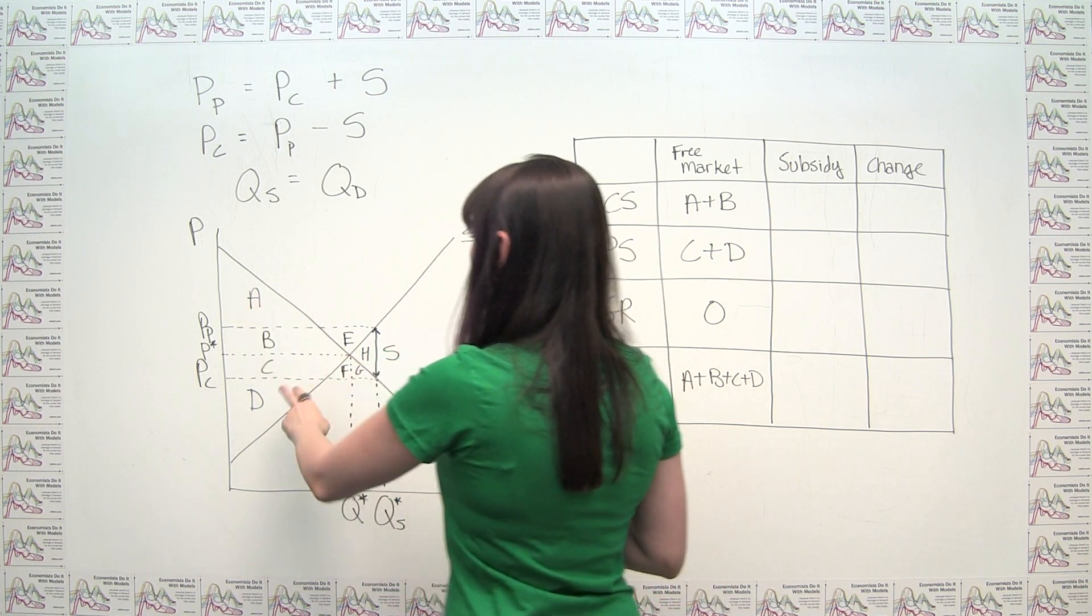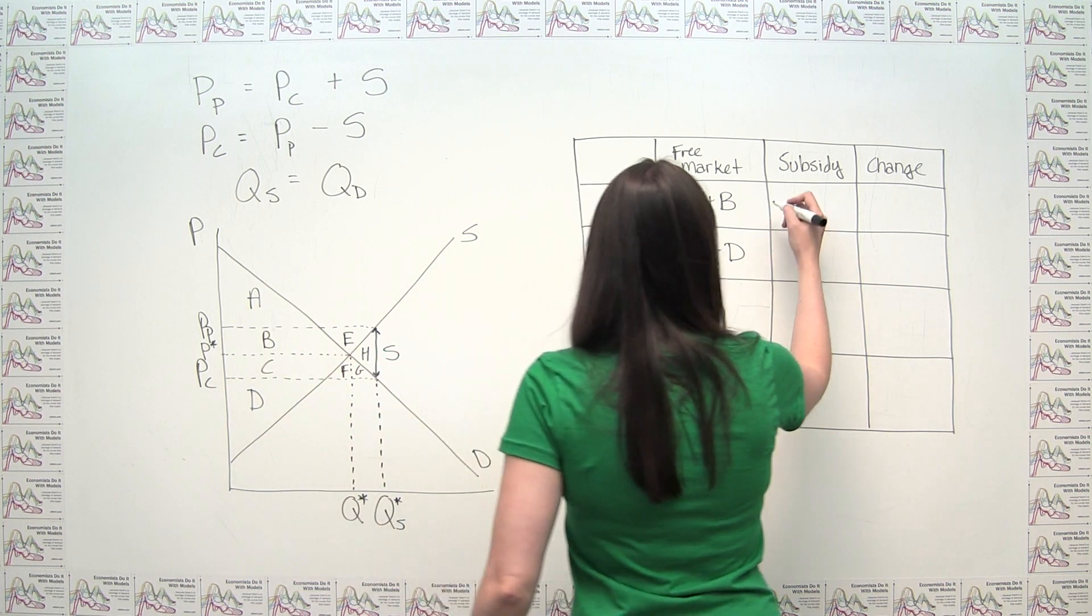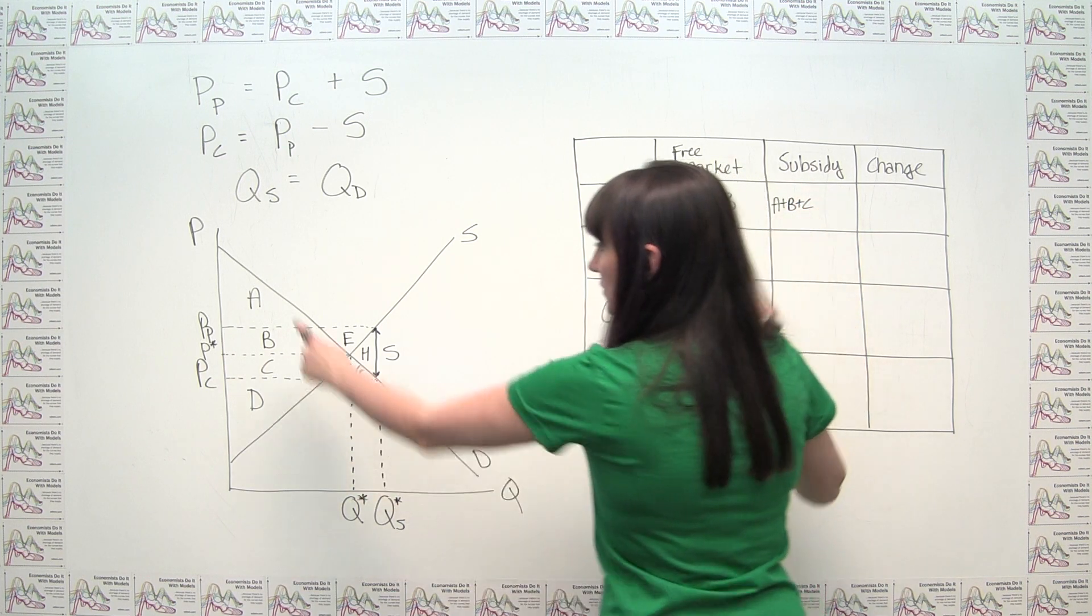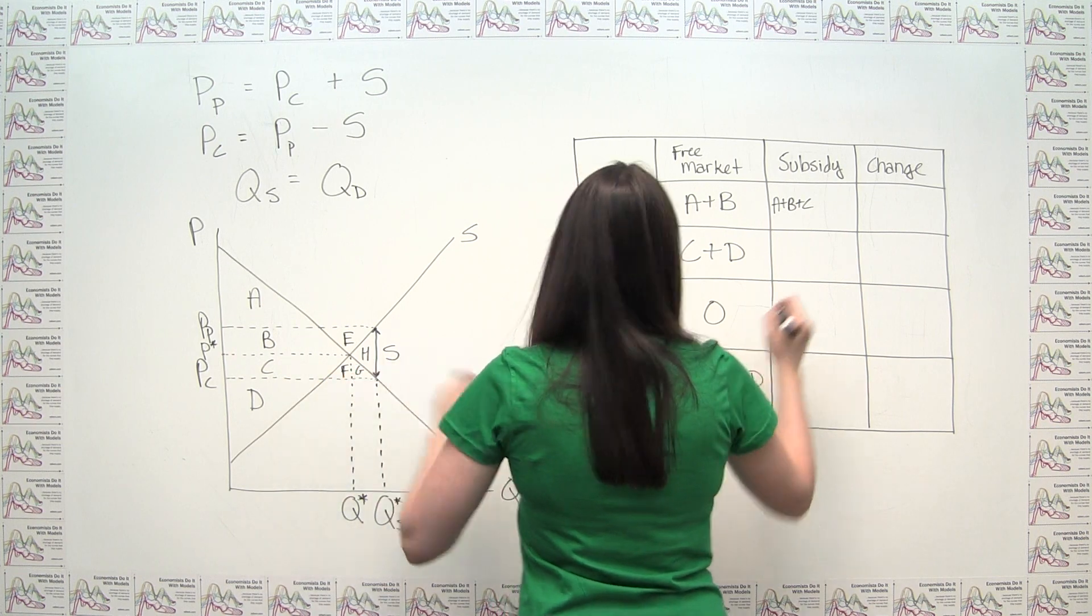So we can say, once the subsidy is put in place, the consumers are getting not just A and B, but A, B, C, F, and G.